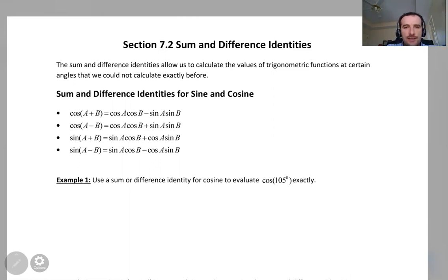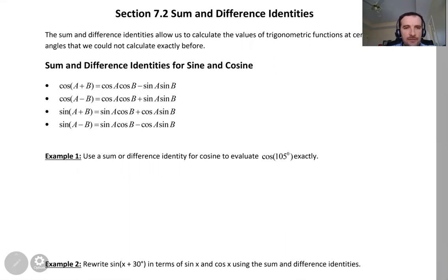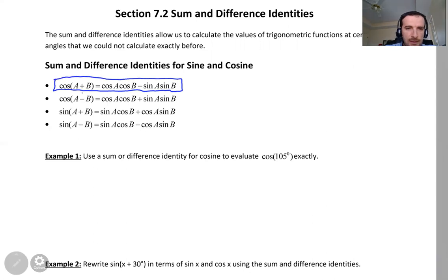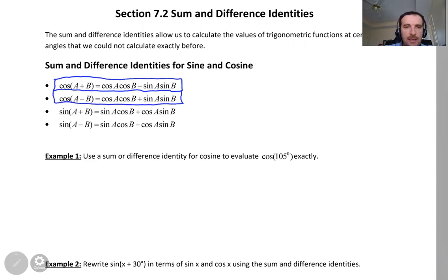First of all, what are those identities? Let me quickly mention them. We are going to work only with sine and cosine to begin. For cosine: cosine of a plus b is equal to cosine of a times cosine of b minus sine a sine b. If there is a plus inside, there is a minus in the formula — that's how I remember it from my college years. And cosine of a minus b: if there is a minus inside, it is cosine a cosine b plus sine a sine b. For cosine we work with cosine and cosine, then sine and sine.